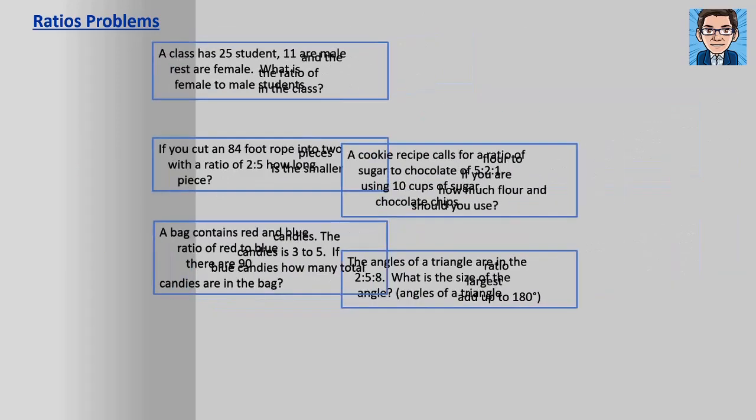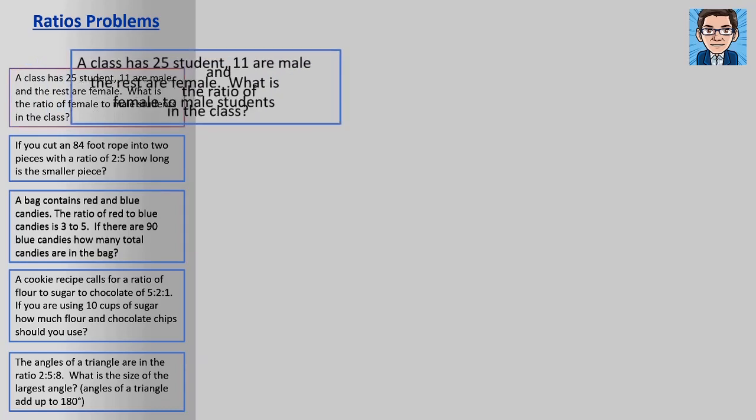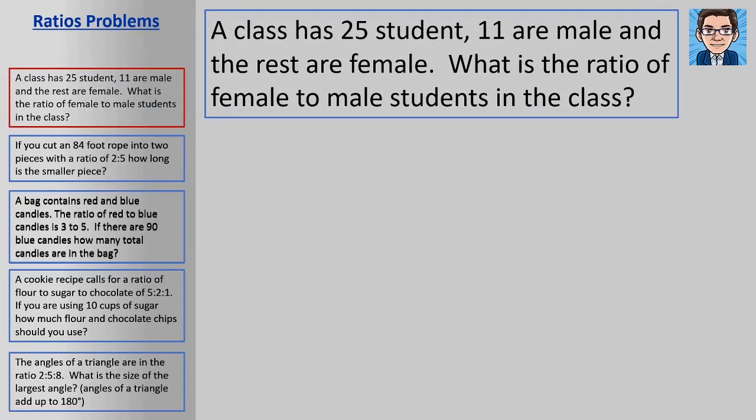Okay, let's take a look at these five ratio word problems. First word problem says that we have 25 students. 11 of them are male. And we want to find the ratio of female to male students in the class. So if we've got 25 total, and 11 are male, 25 minus 11 or 14 are female. Now when you write the ratio, you want to see which one we're referring to first. So we want female to male. So we're going to write that as 14 to 11 because we write the female one first. Female 14 to 11.